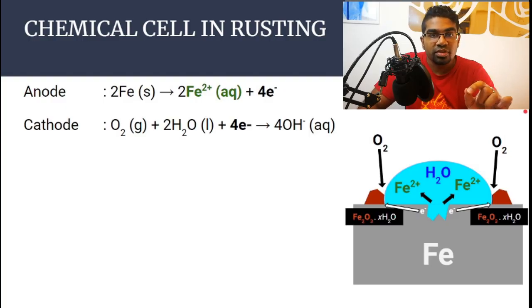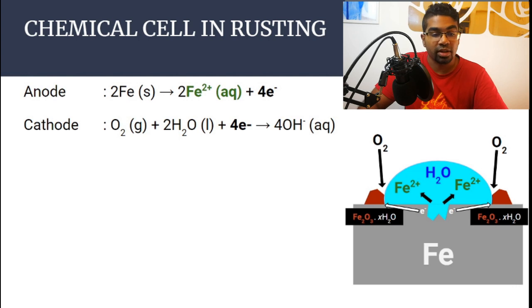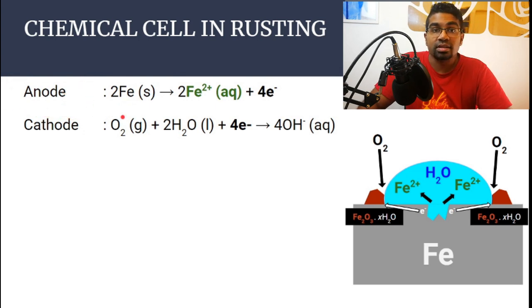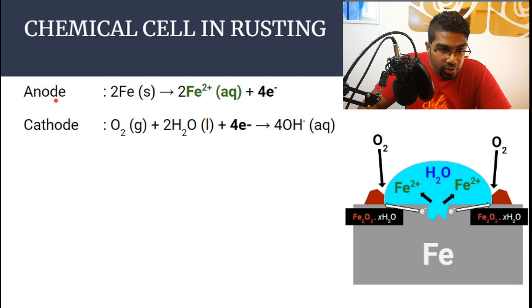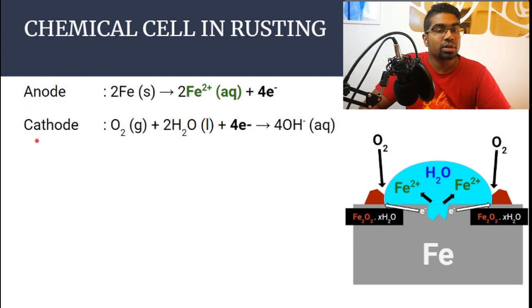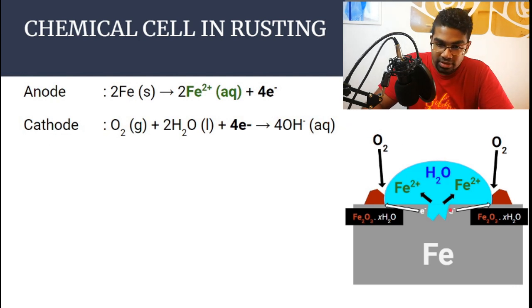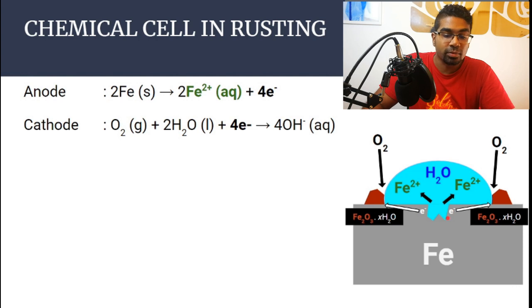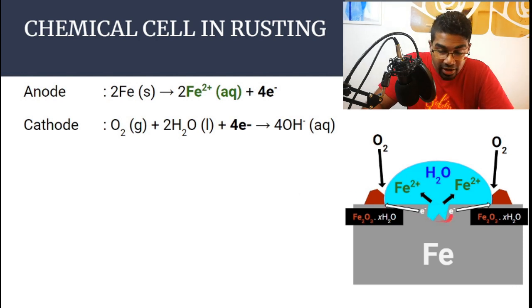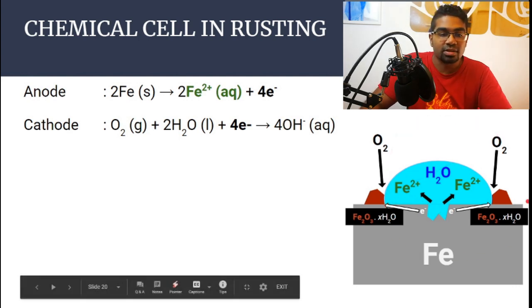Since there is movement of electrons from one position to another in this rusting process, a small chemical cell is actually formed. In a chemical cell we have the anode and the cathode. The anode is the place that donates electrons, and the cathode is the place that accepts electrons. A helpful memory trick: the letters in 'anode' rearranged spell 'donor.' So the center of the water droplet — where iron donates electrons — is the anode, and the edge where oxygen accepts electrons is the cathode.